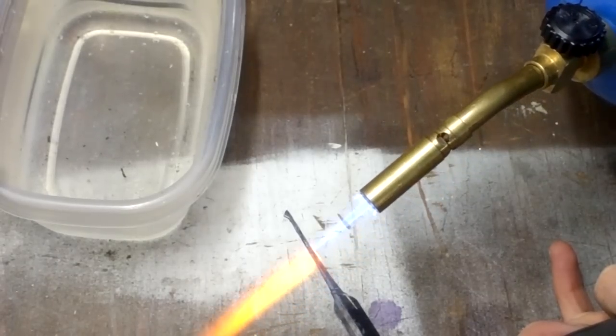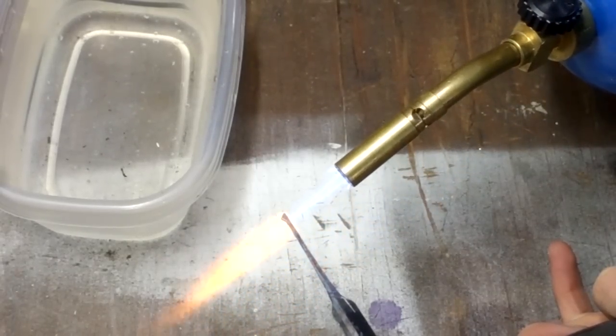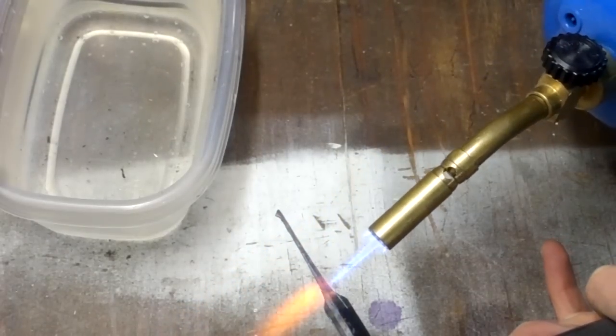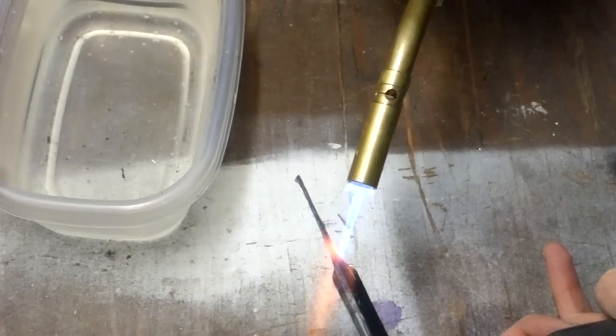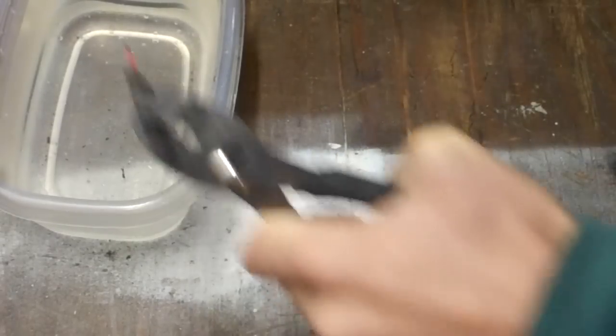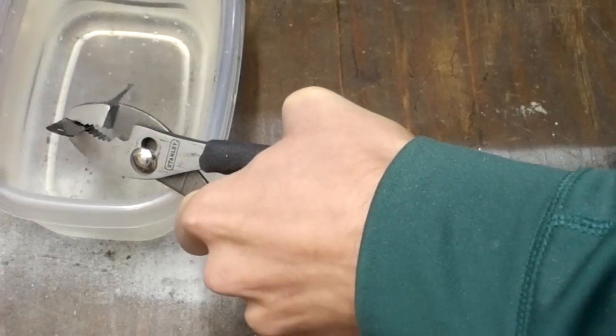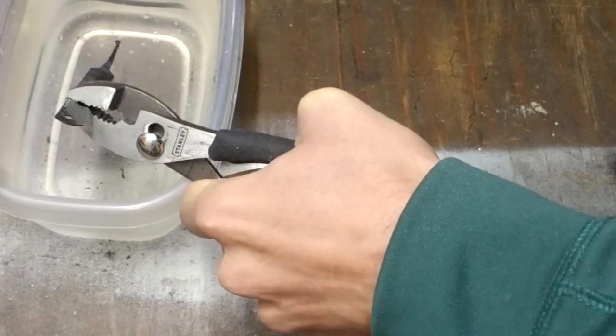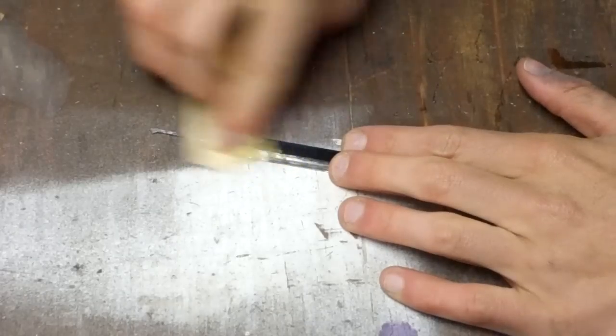Try to keep as much of it red at the same time as possible. Once it's mostly red, dip it in the water to quench it. This will make the pick hard, but also brittle. It might break off in the lock. We'll fix this in a minute.